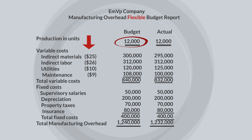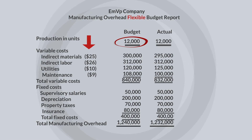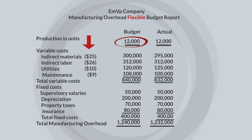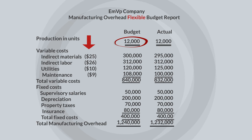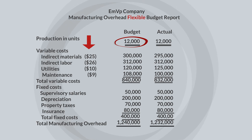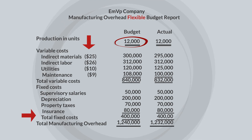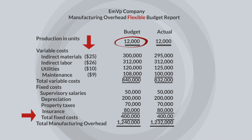In this example, it's 12,000 units. For example, the indirect materials variable cost per unit is $25, so we multiply it by 12,000 units to arrive at the total cost of $300,000. You would do this calculation for each variable cost item. Total fixed costs do not change as activity changes, so the budgeted amounts for these costs remain the same.